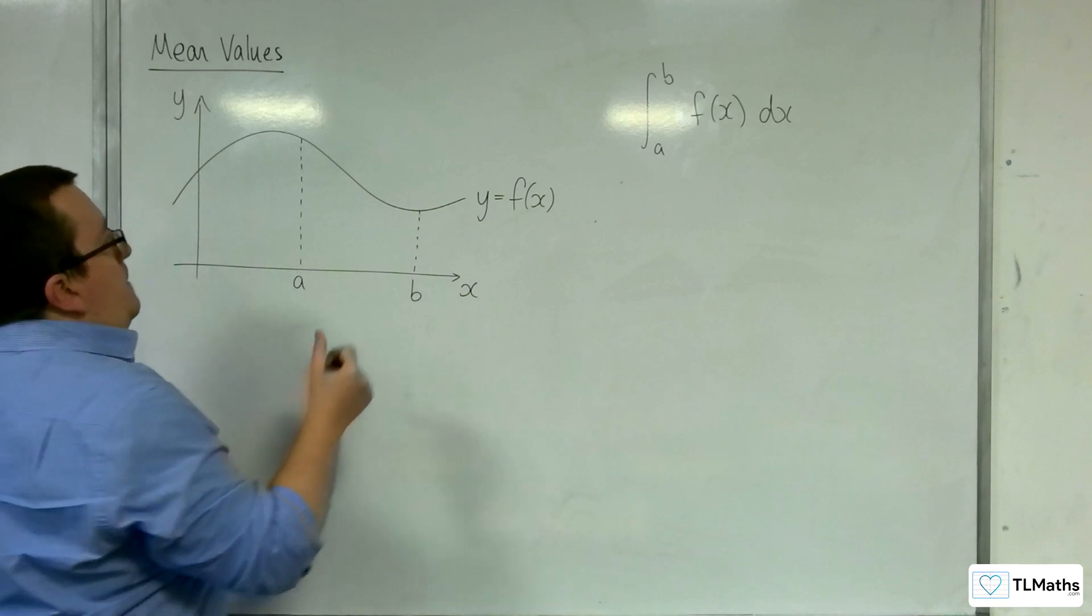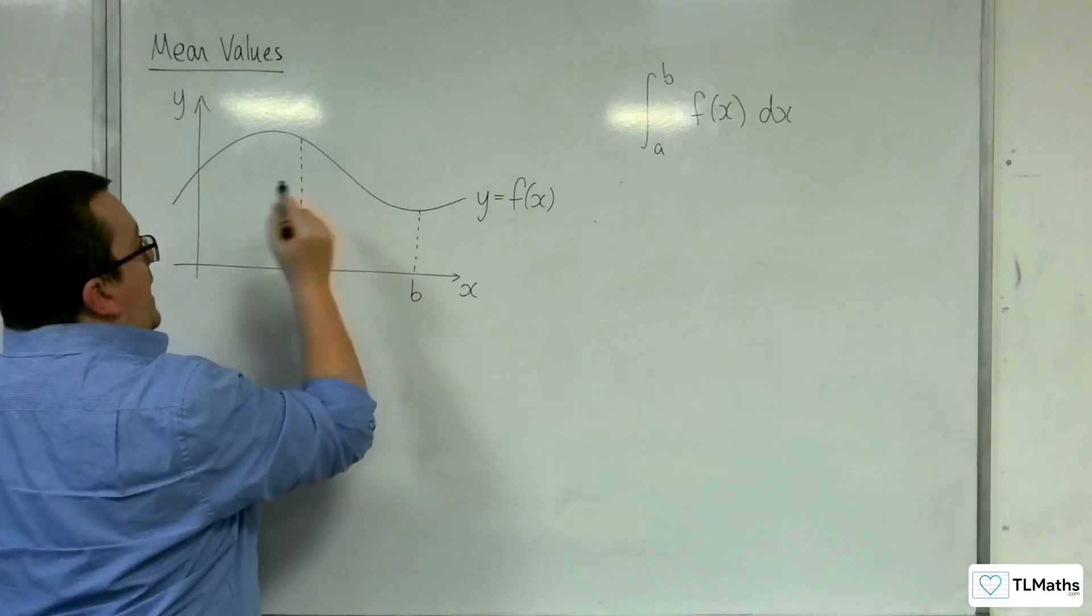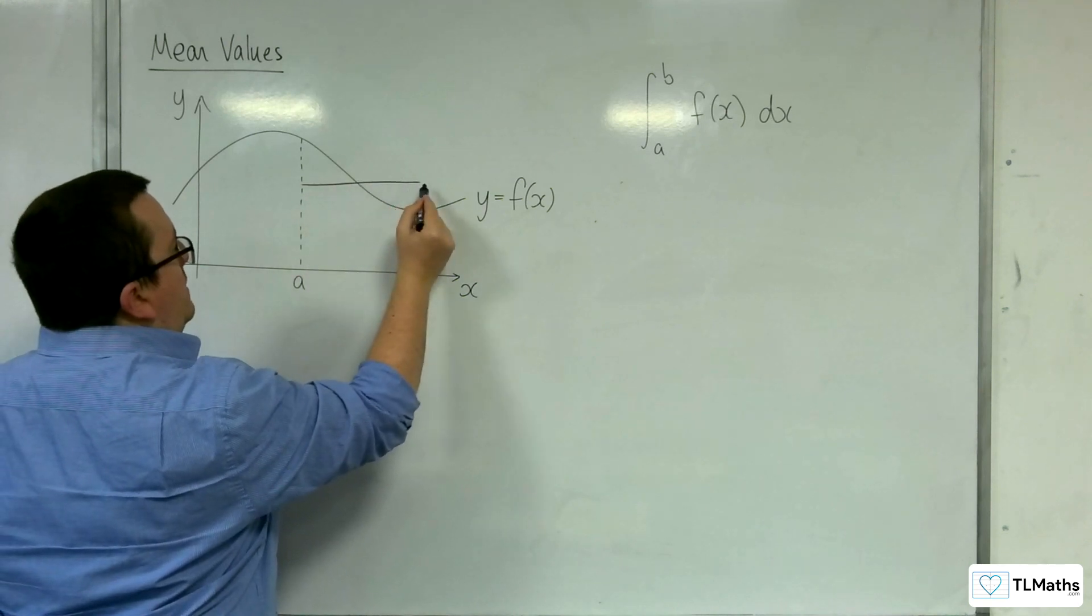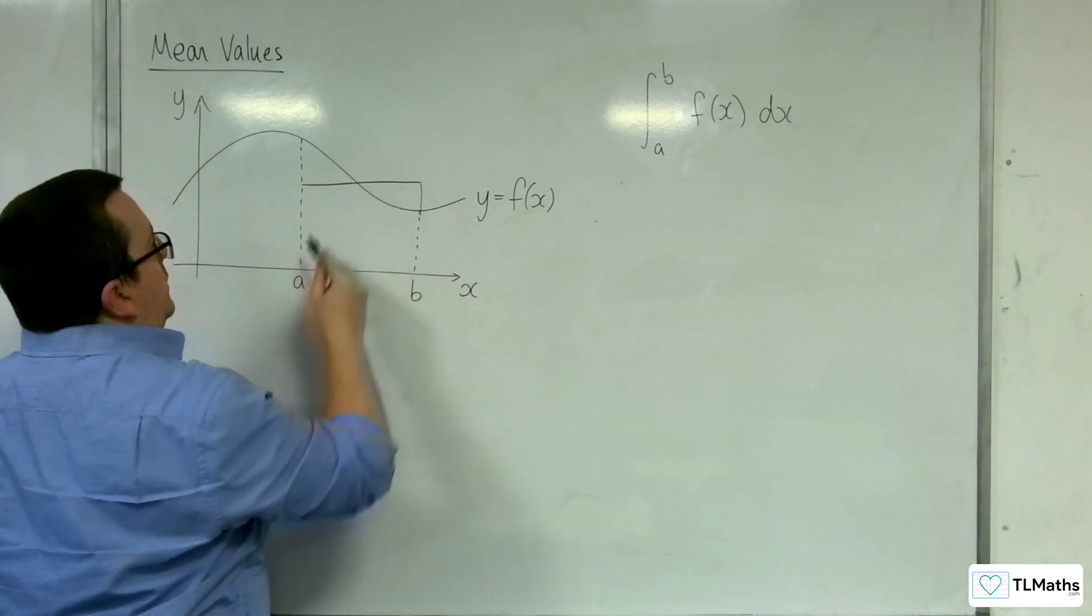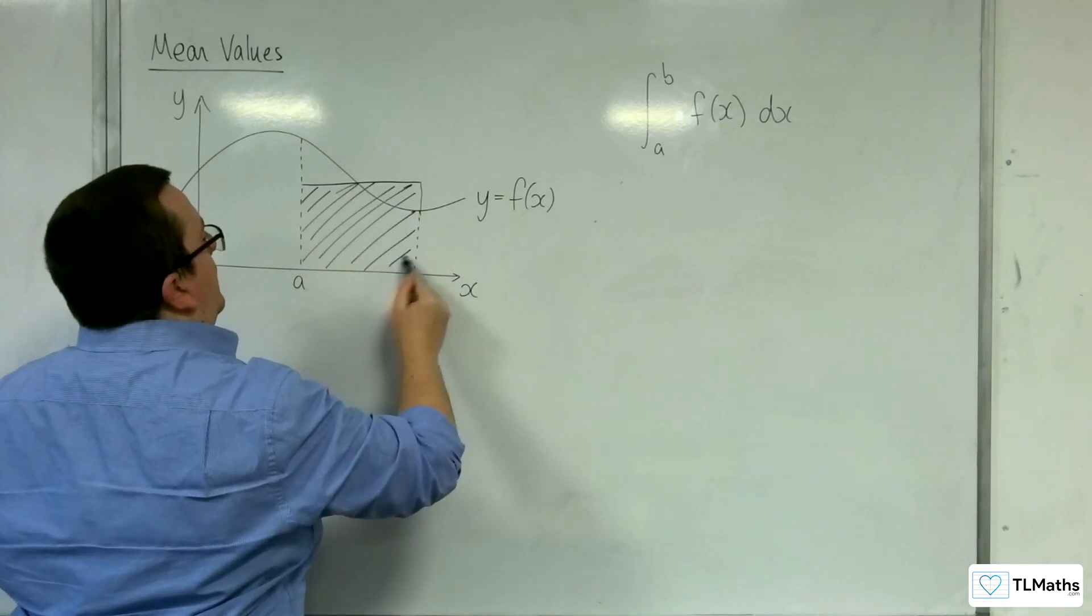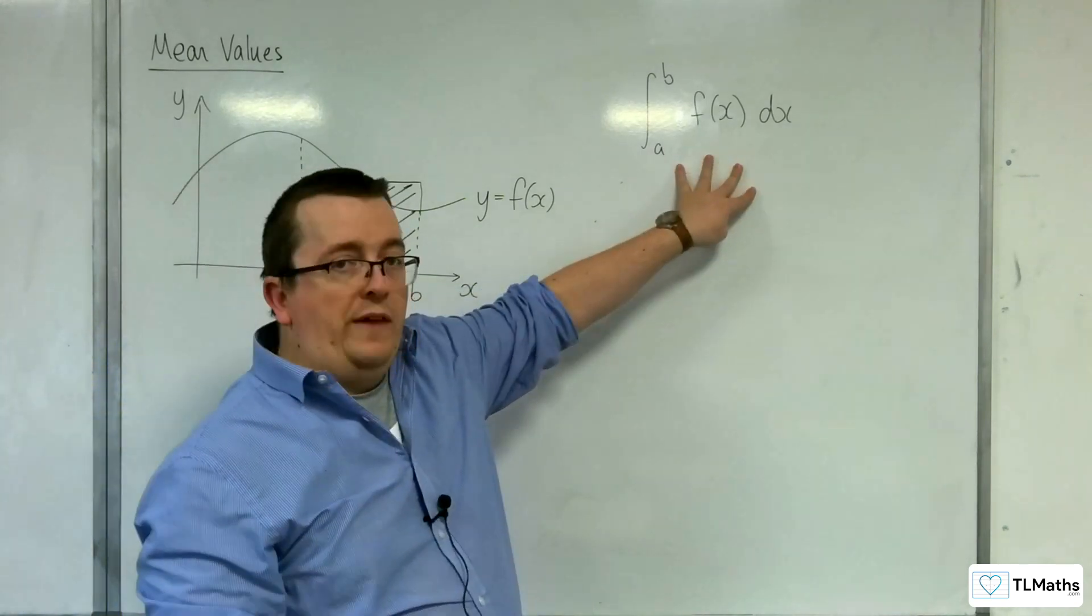Such that the area of that rectangle will be something like here, so that this area will be identical to that value there.